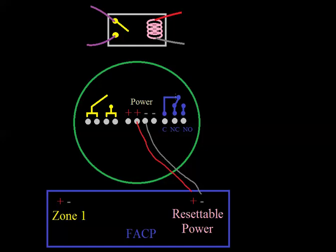And then it would make this onboard relay change states. So common normally closed would go to common normally open. This little armature right there would change states and go over to normally open.